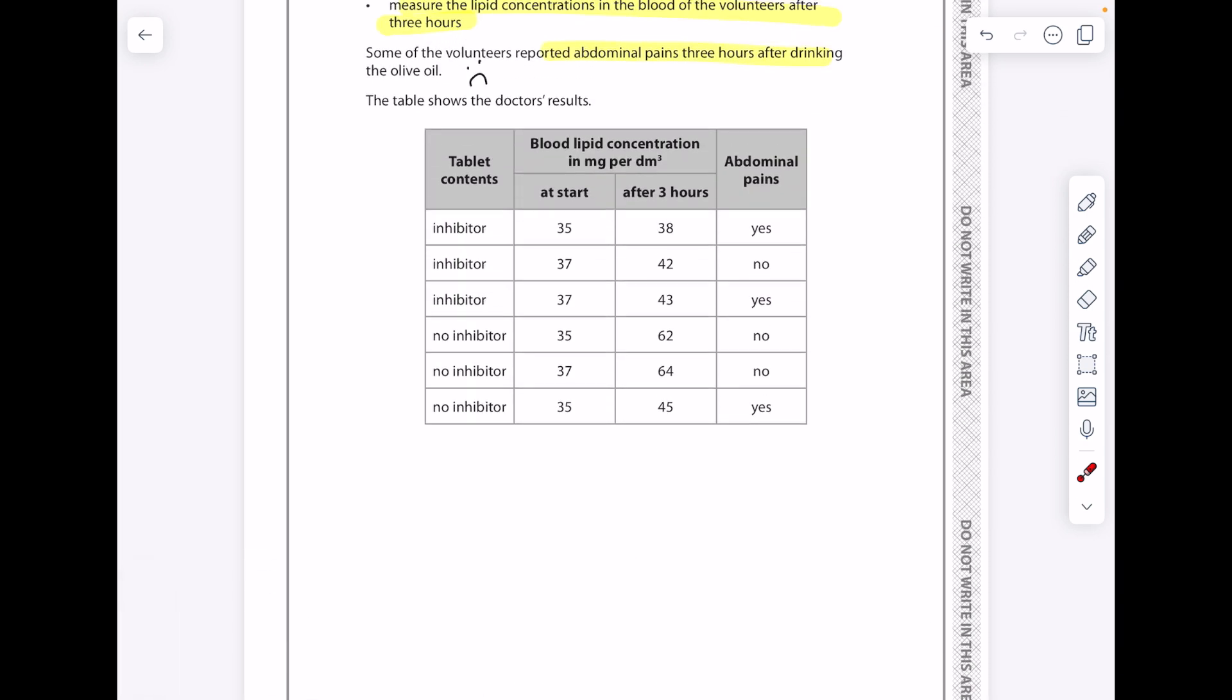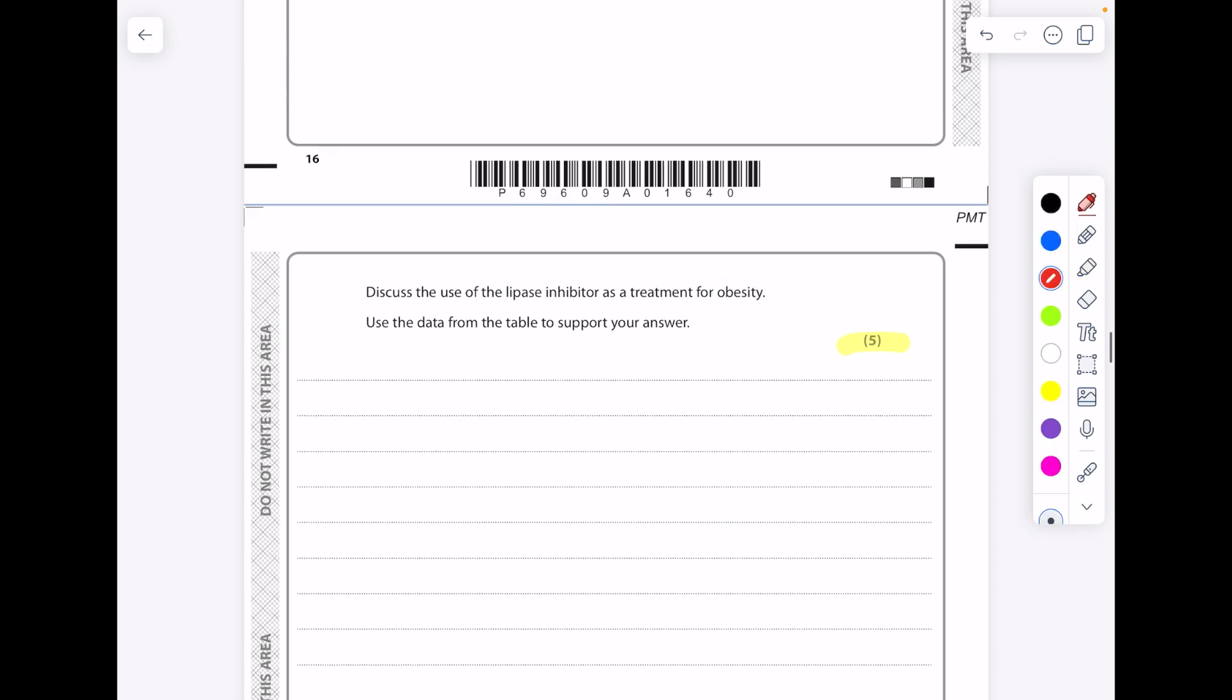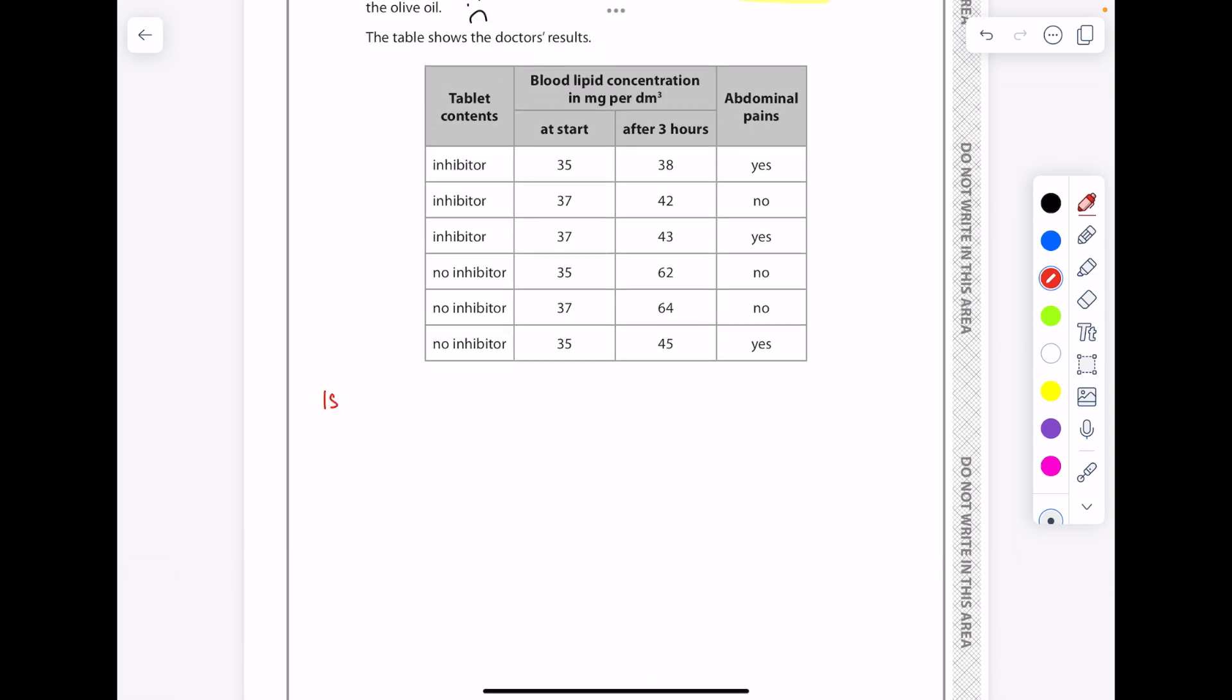Let's just pick through them. Here we can see with the inhibitor that the blood, despite the fact that they've eaten that olive oil or drunk that olive oil, that lipid concentration hasn't really gone up too much compared with no inhibitor where it's vastly increased, meaning more lipids have entered the blood. But abdominal pains have been caused occasionally with the use of an inhibitor, but again no inhibitor we still have some abdominal pains. Discuss the use of the lipase inhibitor as a treatment for obesity using the data from the table to support your answer. Here's that meaty 5 marker. With this discussed question we are going to decide: is the lipase inhibitor a good treatment for obesity?